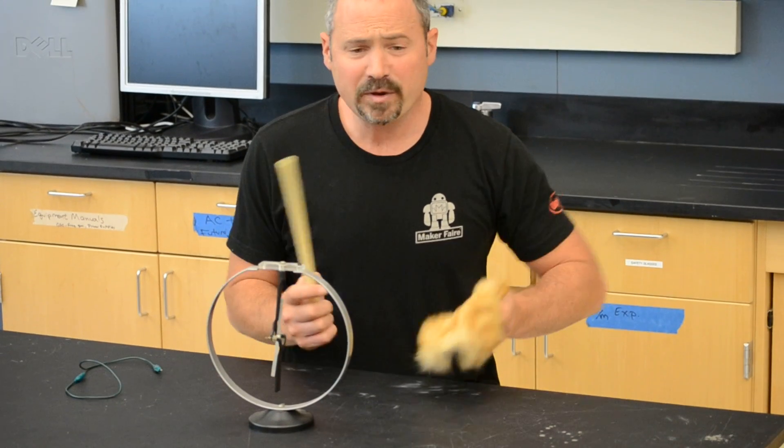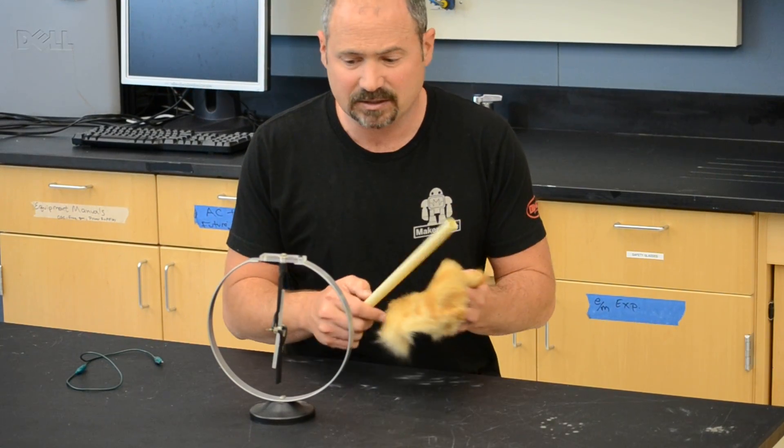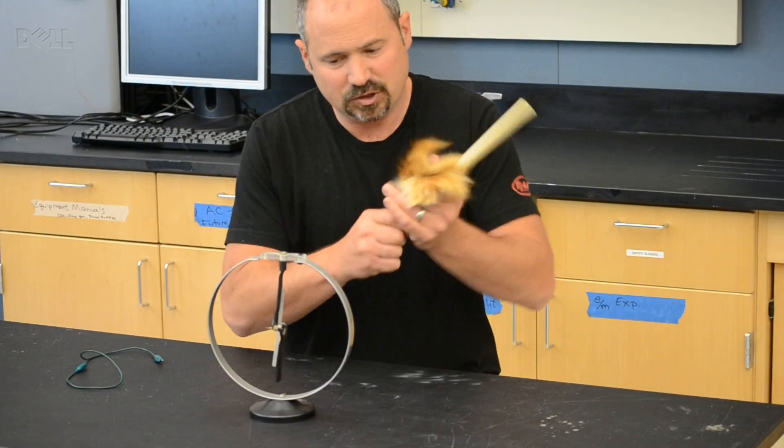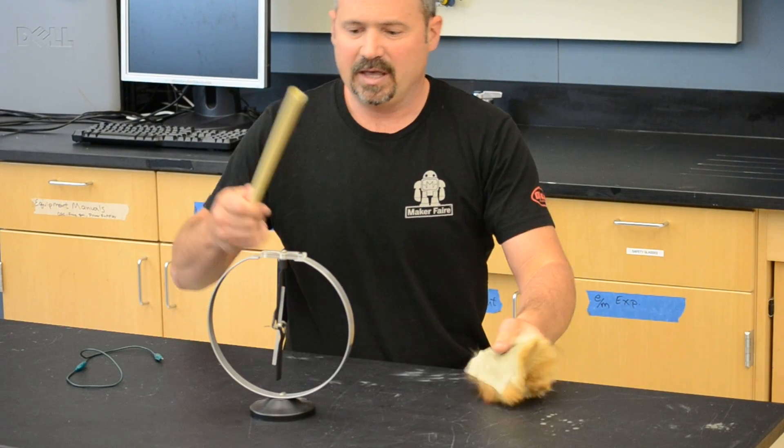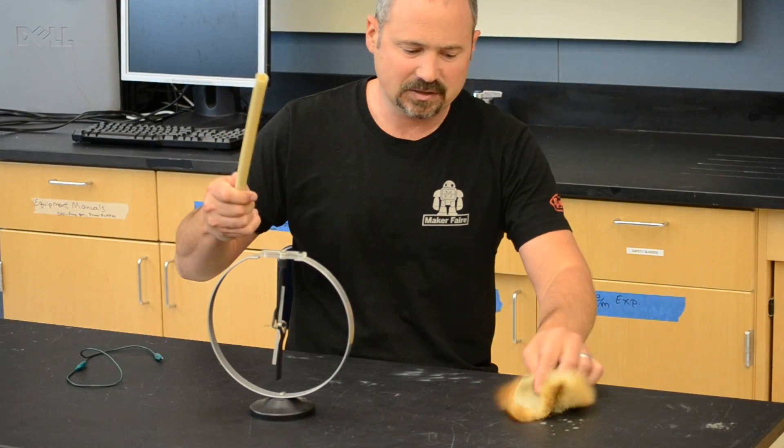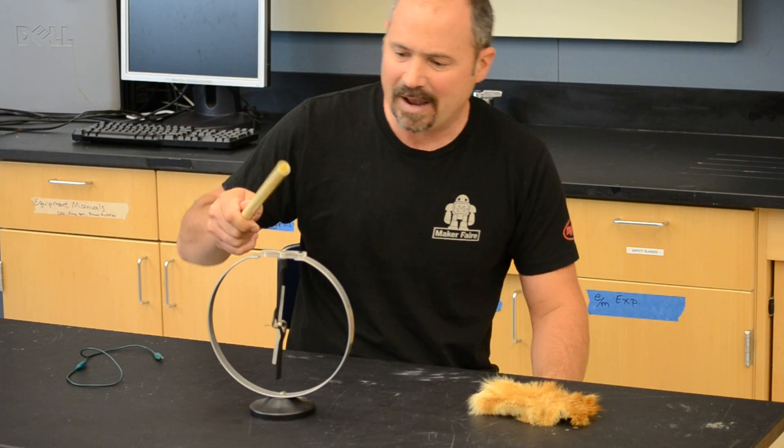So knowing that like charges repel and opposite charges attract, let's do a demonstration. So I'm going to charge this rod with the rabbit fur. And now what's happened is I've taken negatives, I've taken electrons off the rabbit fur and onto the rod.